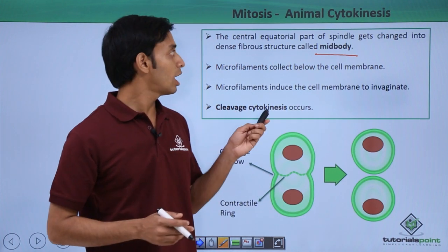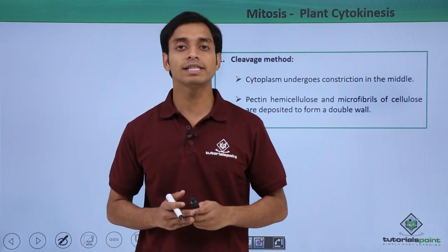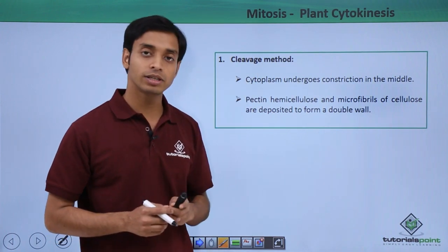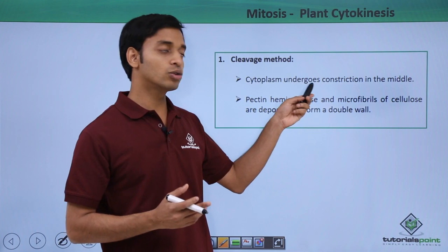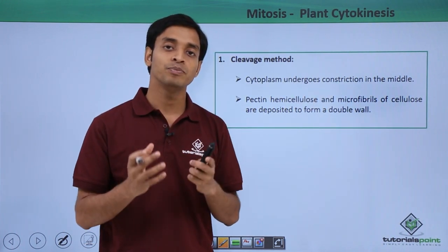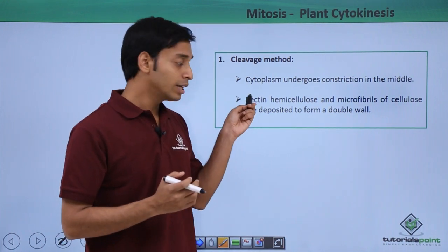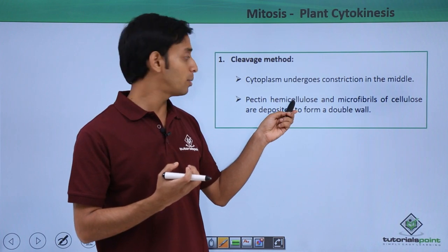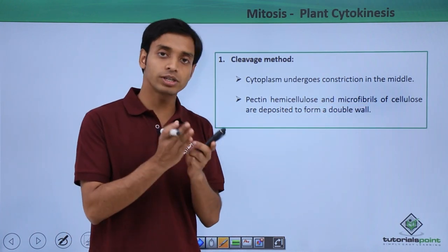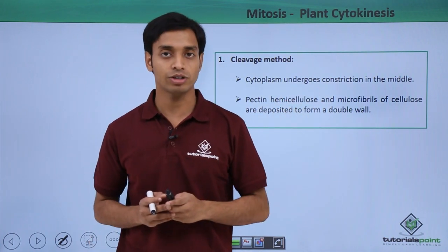Now let us look at how plant cells perform their cytokinesis. In plant cells, cytokinesis can happen in two ways. The first way is known as the cleavage method, where the cytoplasm undergoes constriction in the middle. At this constriction, pectin, hemicellulose, and microfilaments of cellulose start depositing and form a wall-like double-wall structure.